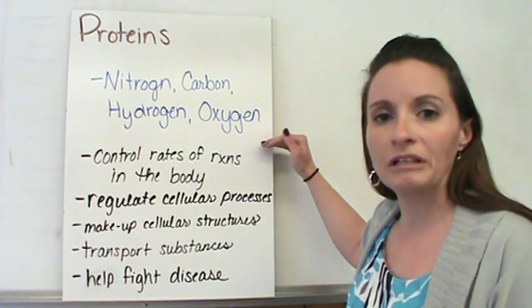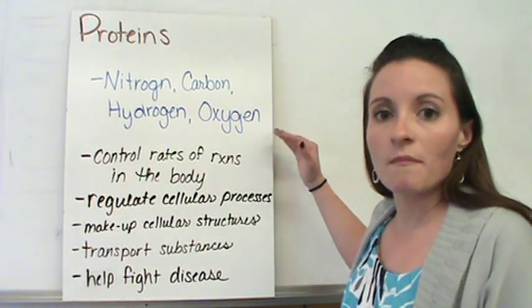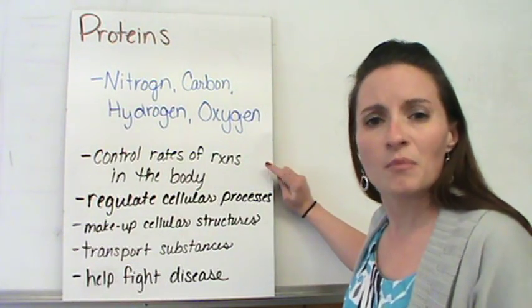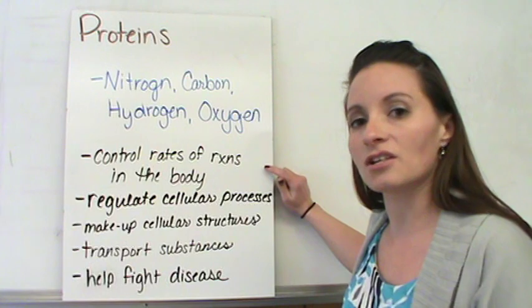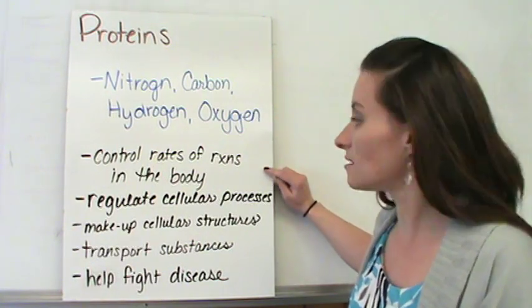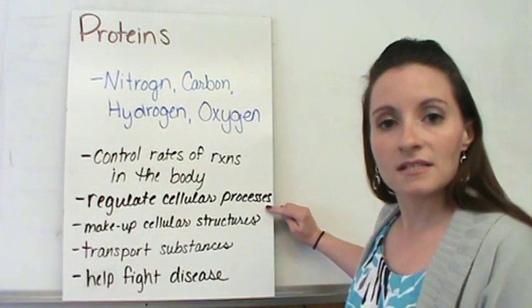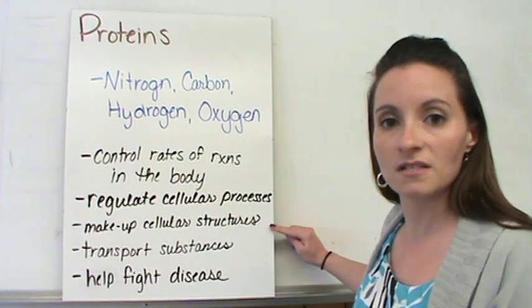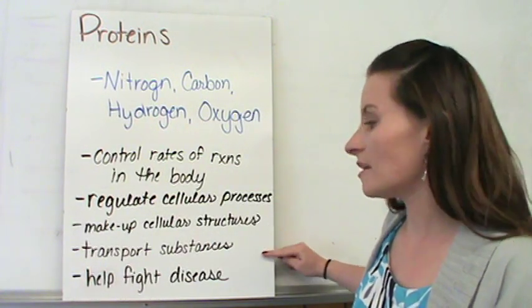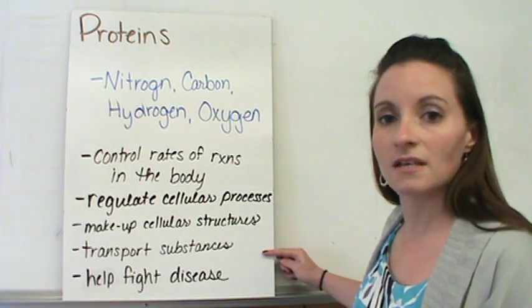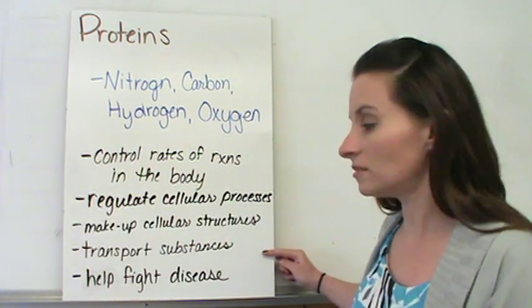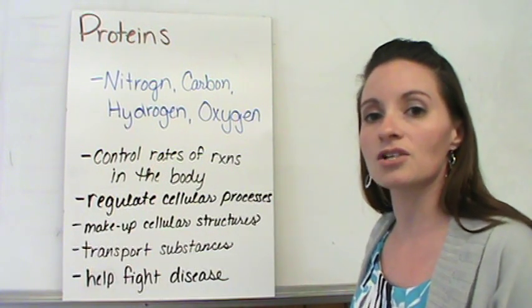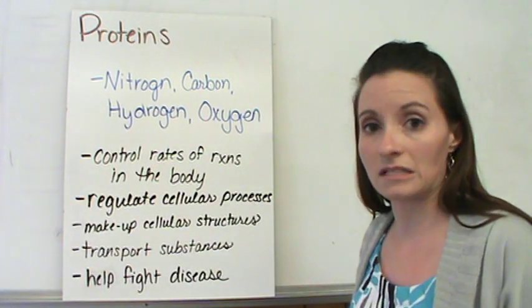Proteins are really important in our body. One of the major things that proteins do is control rates of reactions. This is important because we have chemical reactions occurring all the time within our bodies. They help regulate cellular processes, they make up different forms of the cellular structure, they help transport substances into and out of the cell, and they also help fight disease. So proteins are one of the major important pieces within our bodies.